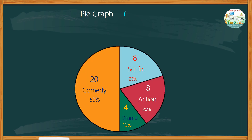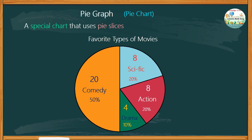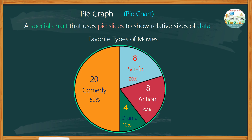Are you familiar with a pie graph or a pie chart? Below is an example of a pie chart about the students' favorite types of movies. A pie chart is a special chart that uses pie slices to show relative sizes of data. The data are presented in a circular form where the circle is divided into sectors or segments. Each sector or segment is labeled with the names of the categories.